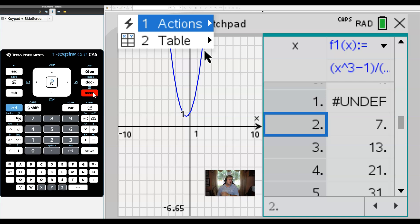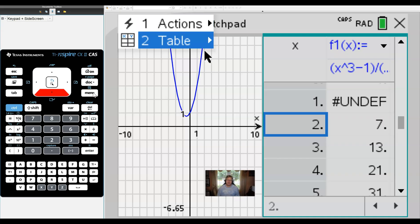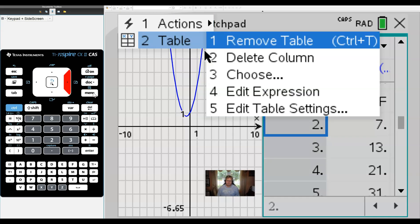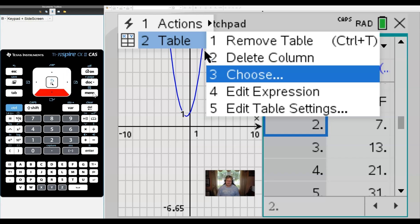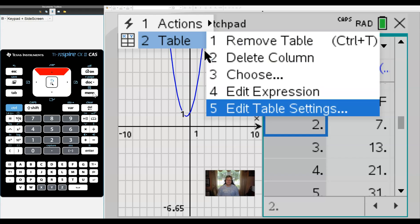Notice the menu button when we're in that table part of the screen gives us completely different options than if we were on the graphing part of the screen. And we're going to go down to Option 2, and we're going to change the settings of the table. So that's Option 5, Edit Table Settings.